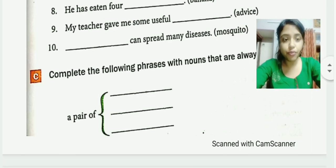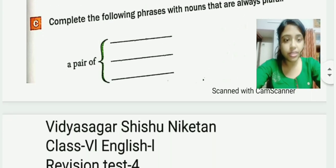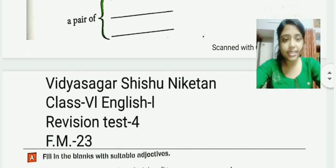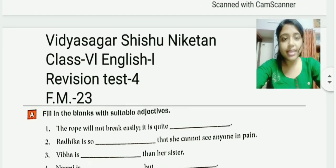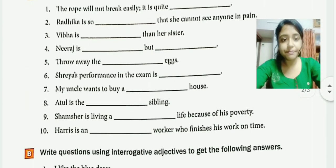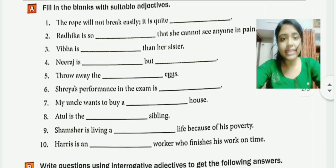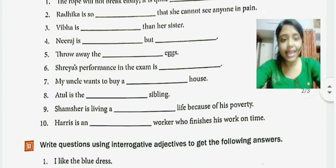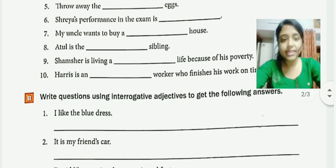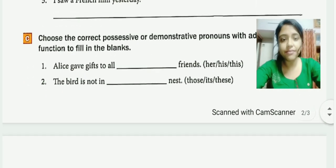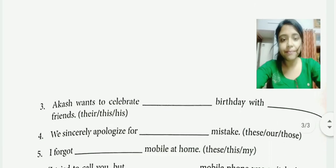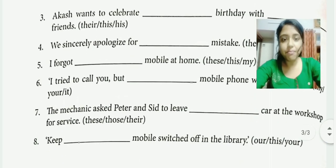Let us move on to the second revision test, that is Revision Test Number 4. This test paper contains 23 marks. The first Exercise A will contain 10 marks. Then B will contain 5 marks. And last, C will contain a total of 8 marks.